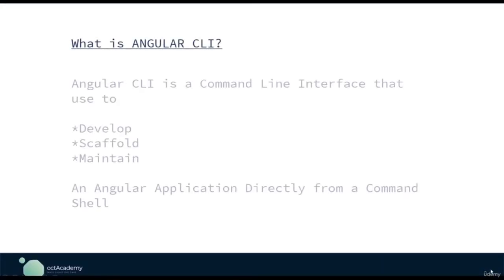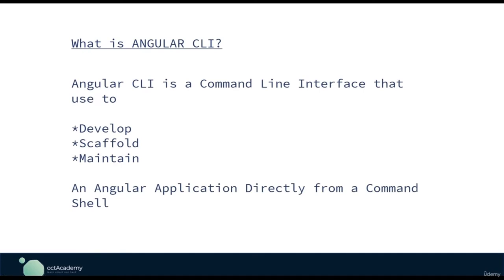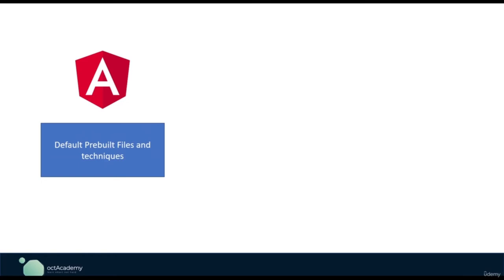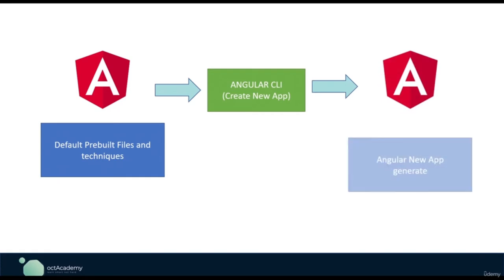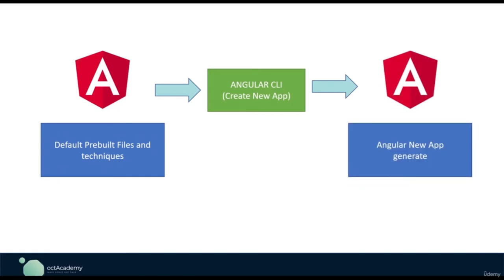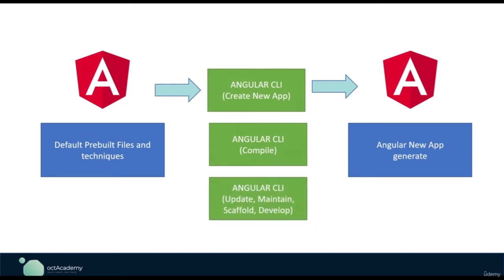The Angular CLI is a command line interface tool used to initialize, develop, scaffold, and maintain Angular applications directly from a command shell. Angular is a JavaScript framework with default pre-built files. With the Angular CLI, we can create a new Angular app with a single line of command. The browser also doesn't know Angular, so we have to compile or build the Angular app to production using the Angular CLI. We can also update, maintain, scaffold, and develop an Angular app using the Angular CLI.